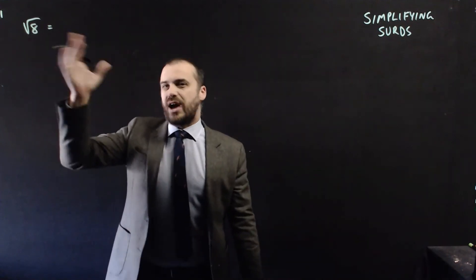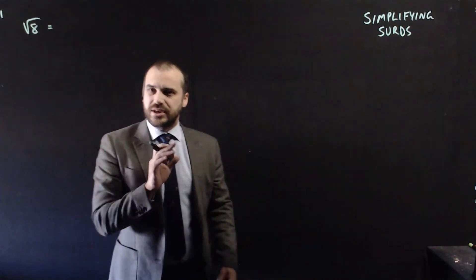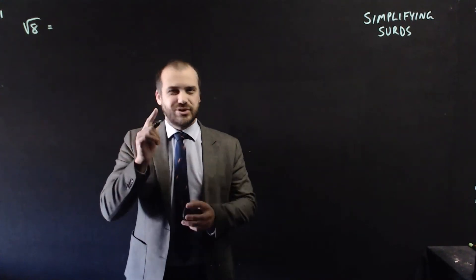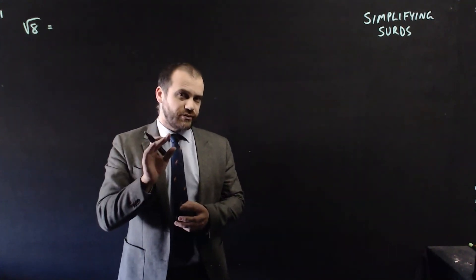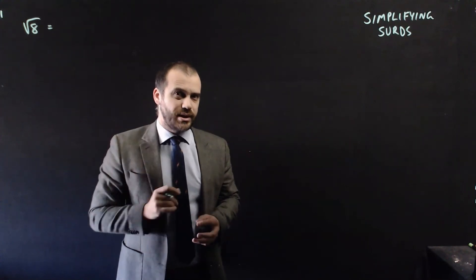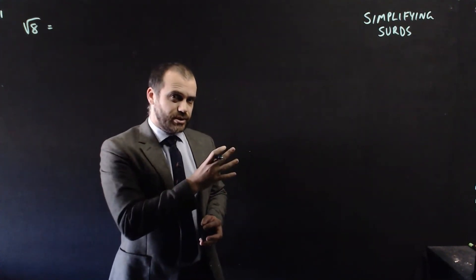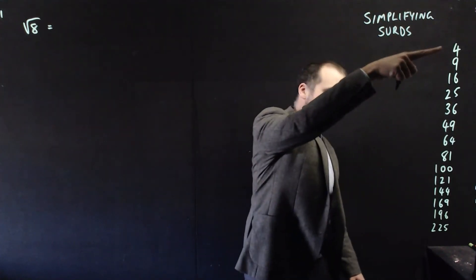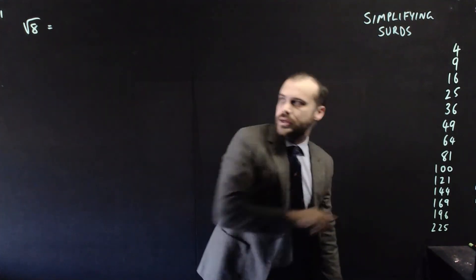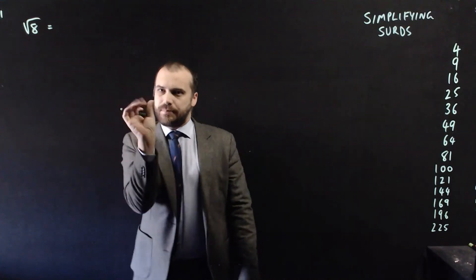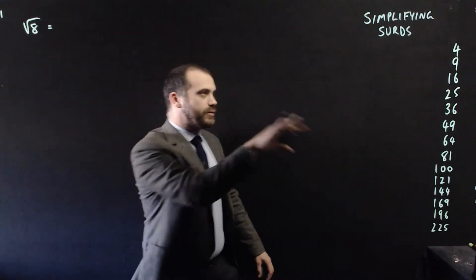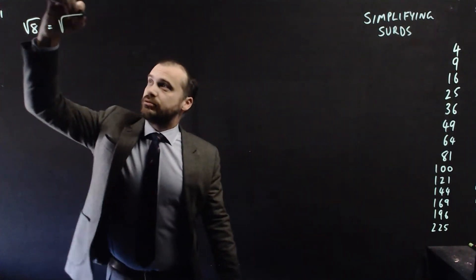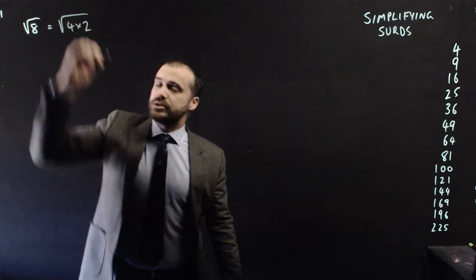Here we have the square root of 8, that is a surd. Now the key here is going to be taking that number 8 and breaking it up into two factors, but one of those factors has to be a square number. Here are our square numbers, all the way from 2 squared to 15 squared. Now what can I break 8 up into factors where one of them is one of those numbers?